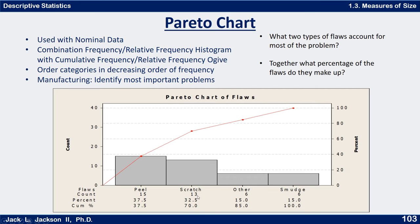15 of those had a peel flaw — maybe the paint was peeling off. 13 had a scratch, six had a smudge, and six were other. The other category should always be last, even if it's a little higher than the ones before. But if 'other' is way higher than the rest, it should probably be broken apart and detailed. This is a bar graph for nominal data in decreasing order of bar heights.